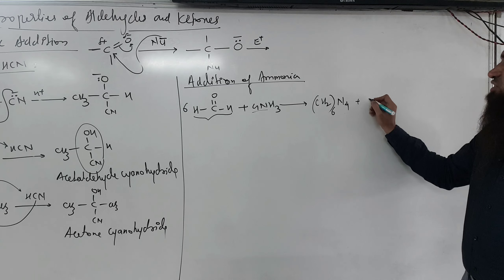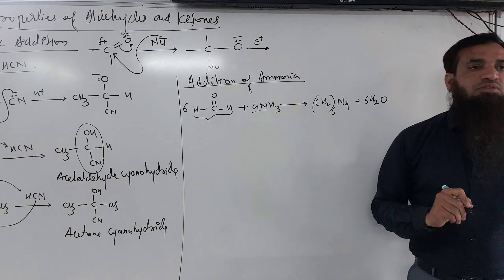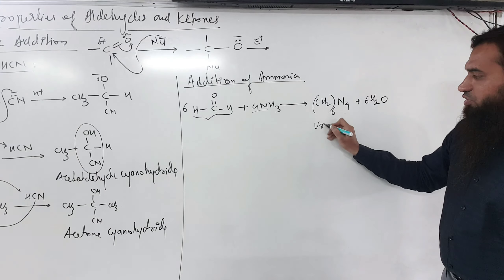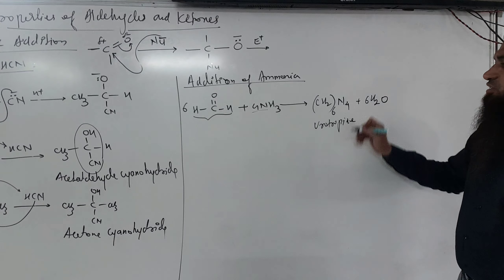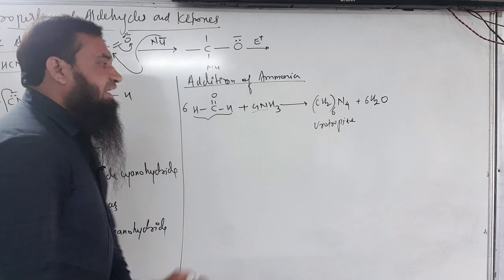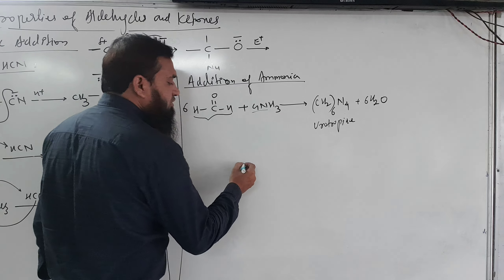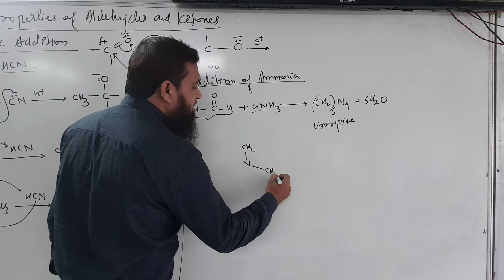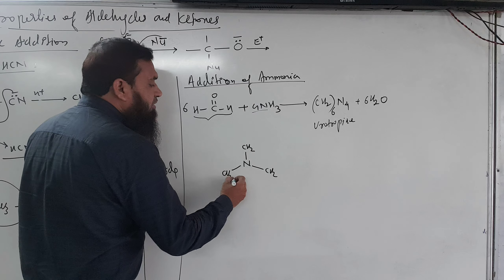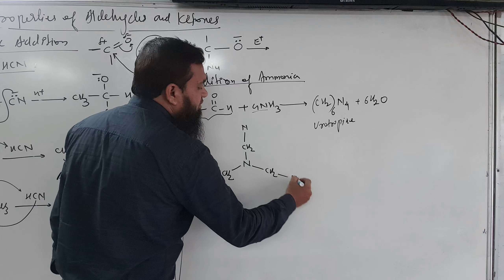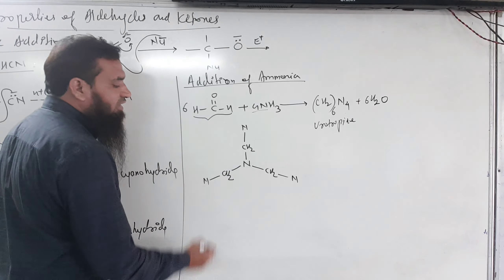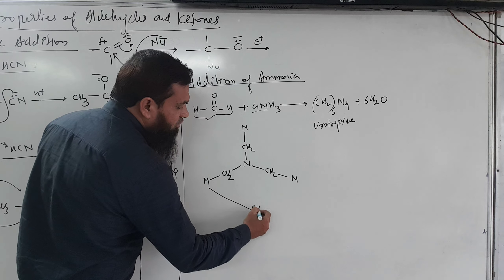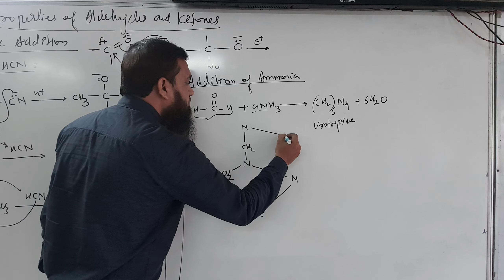Hexamethylene tetramine has six CH2 groups and four nitrogen atoms. The remaining atoms: six oxygen and twelve hydrogen, giving six H2O. This compound is called urotropin, also called hexamethylene tetramine, and it has medicinal uses.